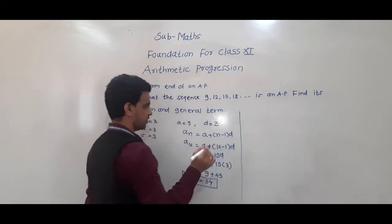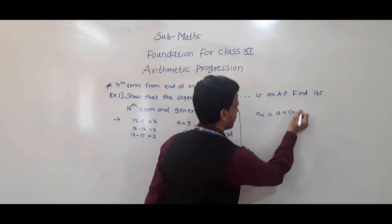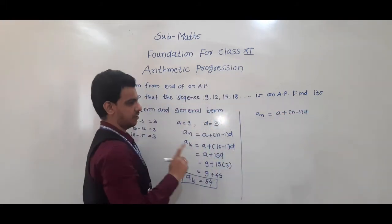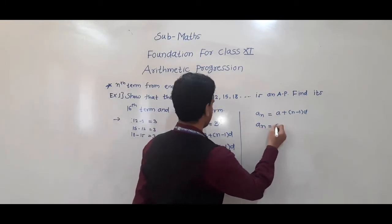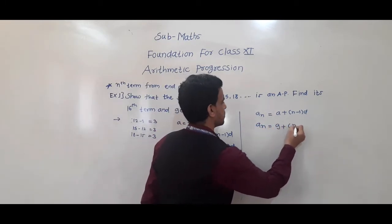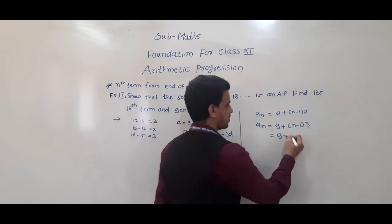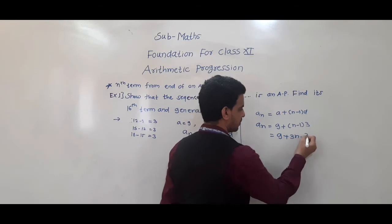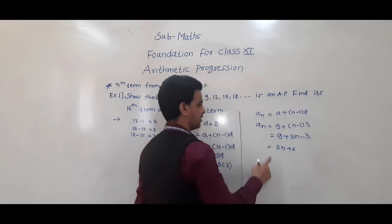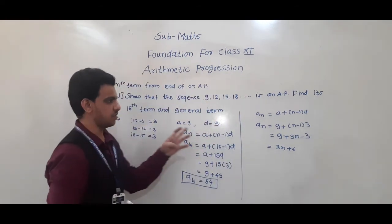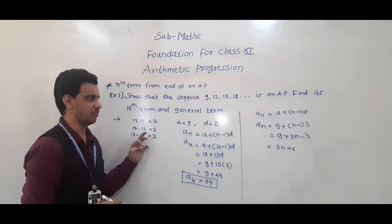Now, we find the general term. an = a + (n−1)d = 9 + (n−1)×3 = 9 + 3n − 3 = 3n + 6. So, 3n + 6 is the general term or nth term of this AP.